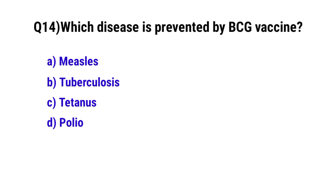Question number 14: Which disease is prevented by the BCG vaccine? The correct option is B: tuberculosis.